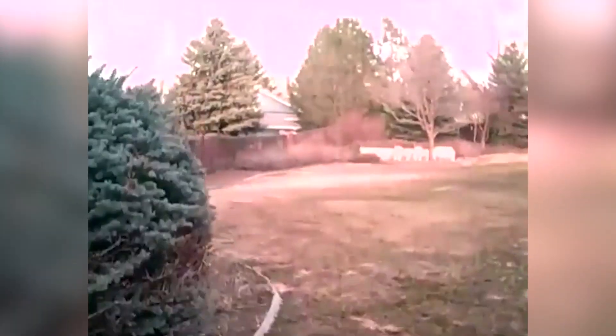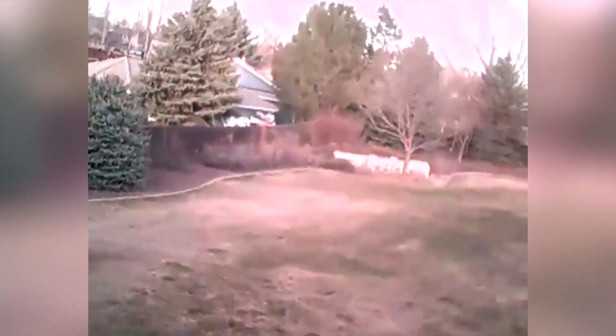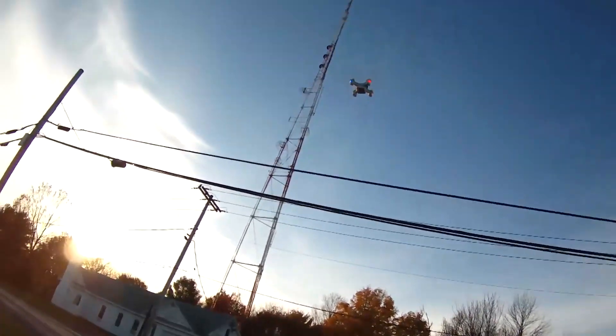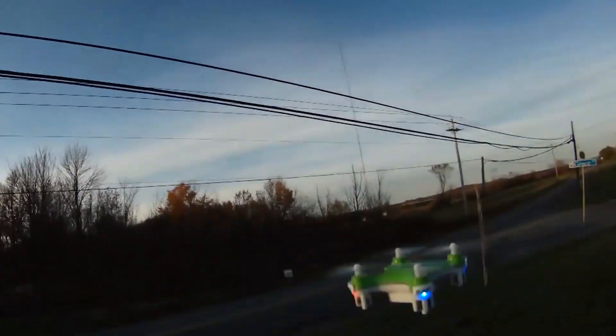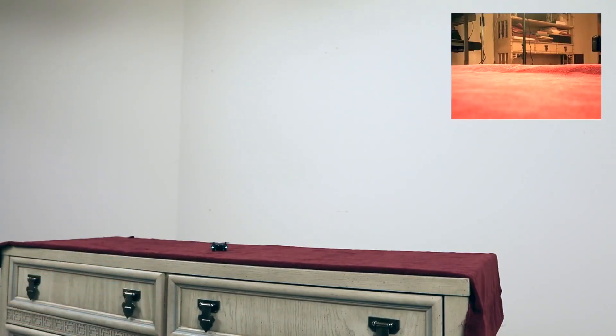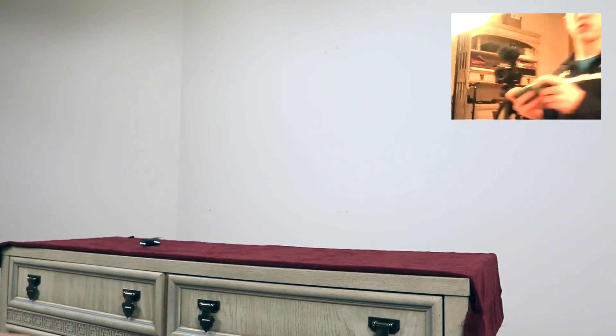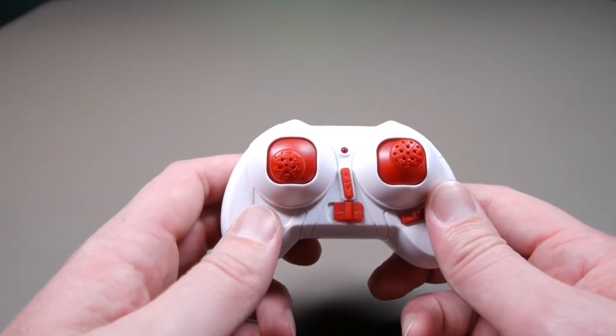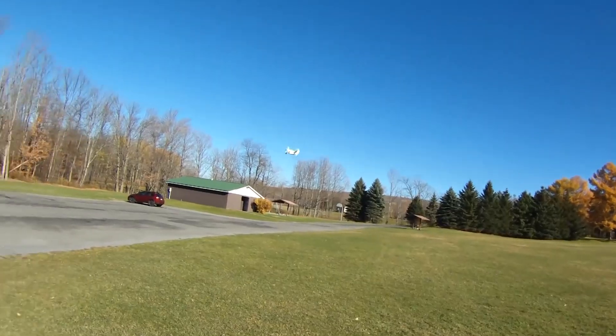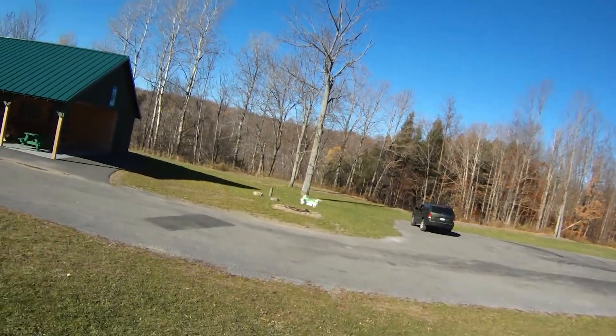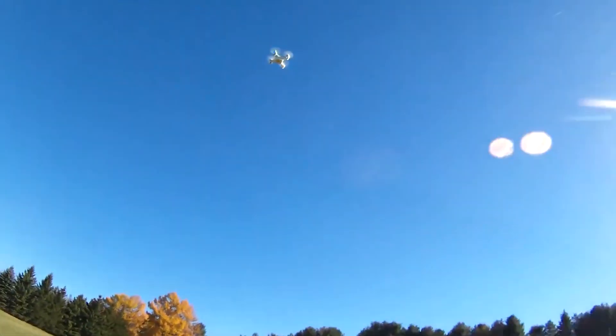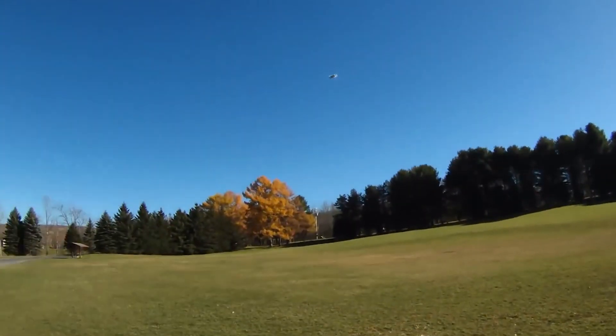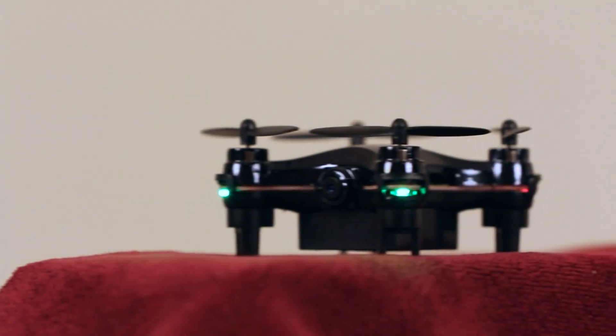The Axis Vidius has a 6-axis gyro-stabilization system and can flip and roll 360 degrees while streaming videos. And it comes with a 2.4 GHz controller for controlling the drone and may be operated via a smartphone. The drone itself is a square with dimensions of 1.5 inches or less.